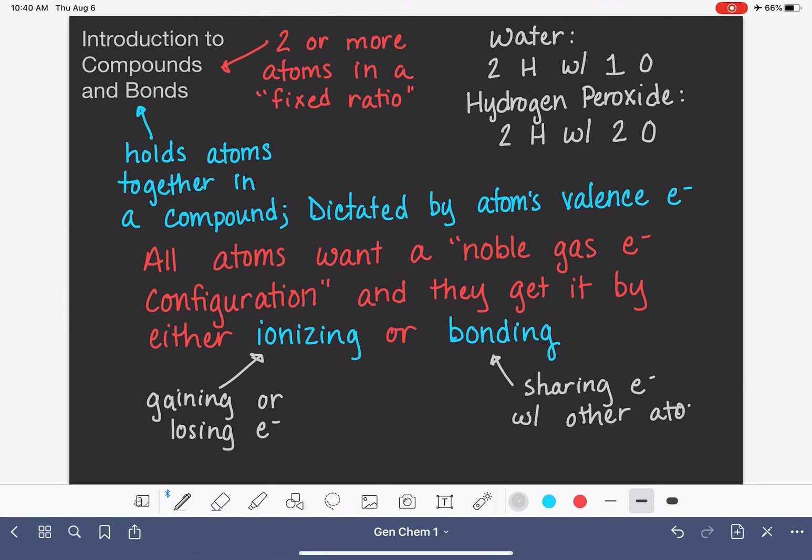And again, the sharing of electrons with other atoms is ultimately what results in holding atoms together to form these compounds in these fixed ratios. So in the next few videos, we're going to study the concept of bonding and atoms sharing electrons with each other as an alternative way of achieving their noble gas configurations.